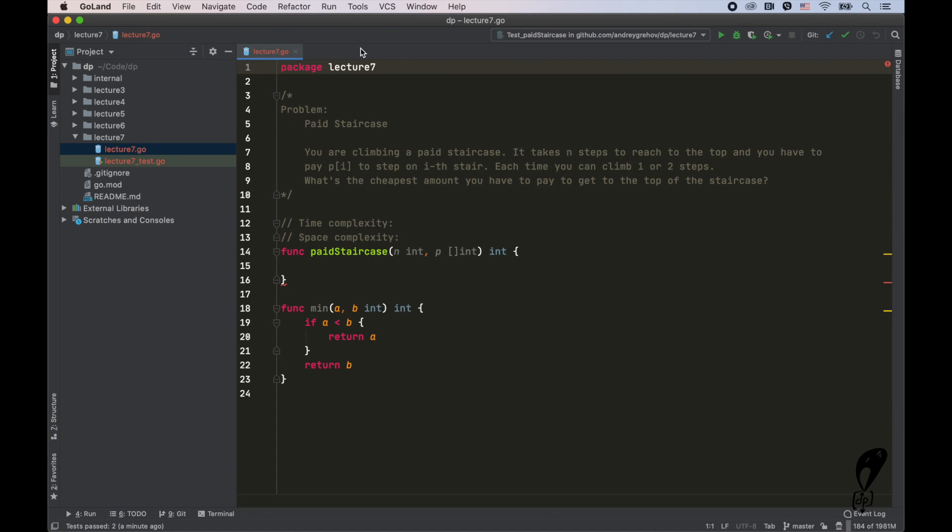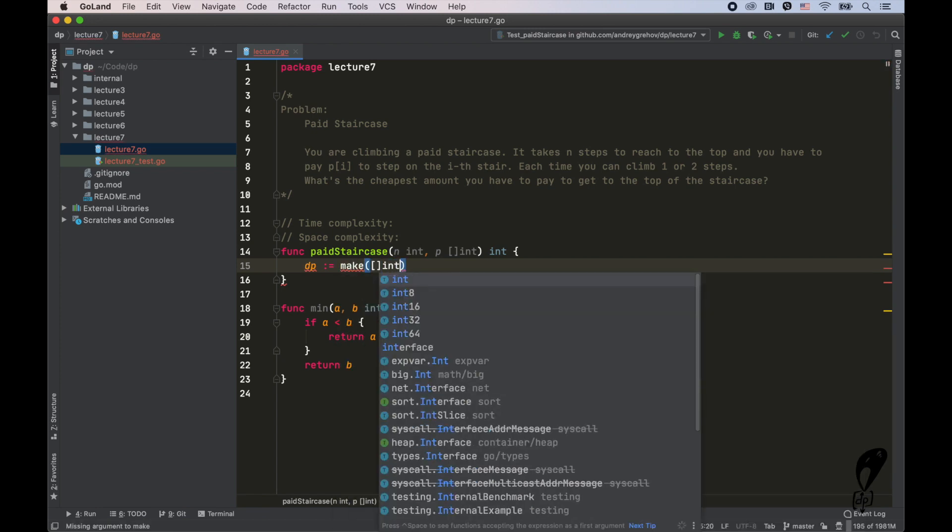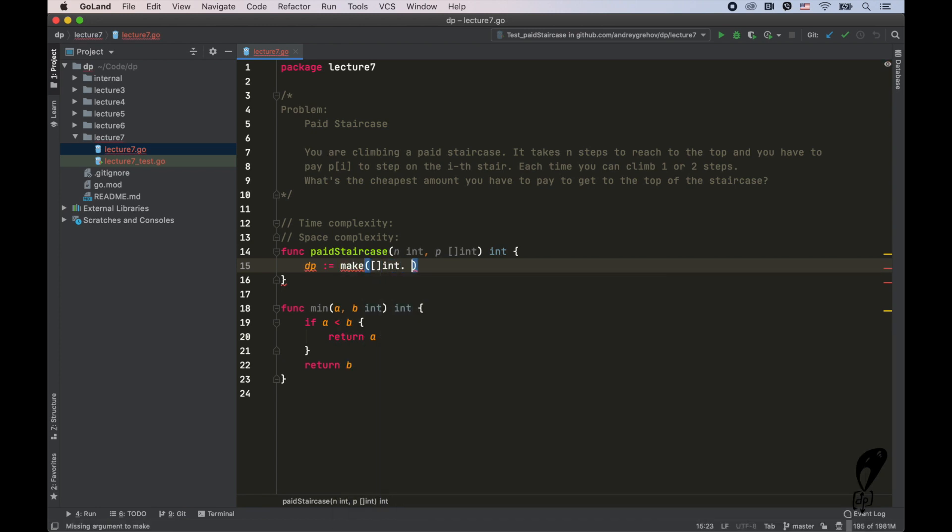All right, so here is the template for the paid staircase problem. You're climbing a paid staircase. It takes n steps to reach to the top, and you have to pay p of i to step on the i-th stair. Each time you can climb one or two steps. What's the cheapest amount you have to pay to get to the top of the staircase? Awesome. So let's apply the same technique as we use all the time. So we're going to allocate memory for sub-problems for the solutions to our sub-problems. I'm not going to use any optimizations here. So we'll just allocate n plus one.